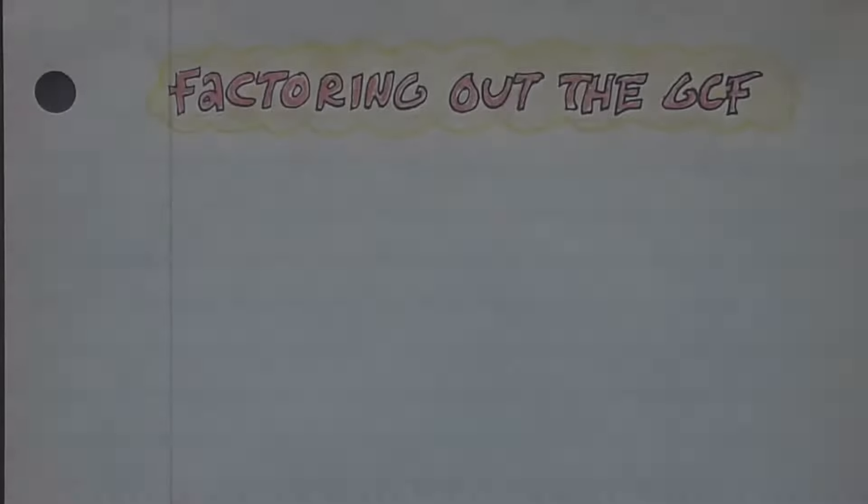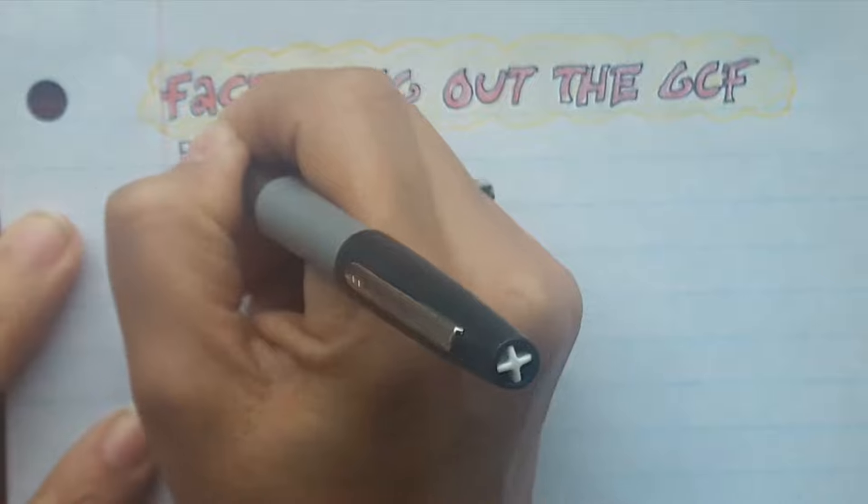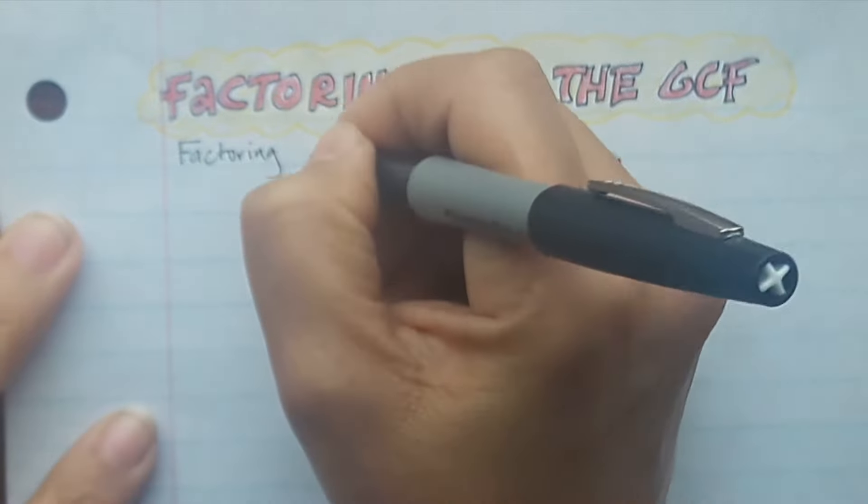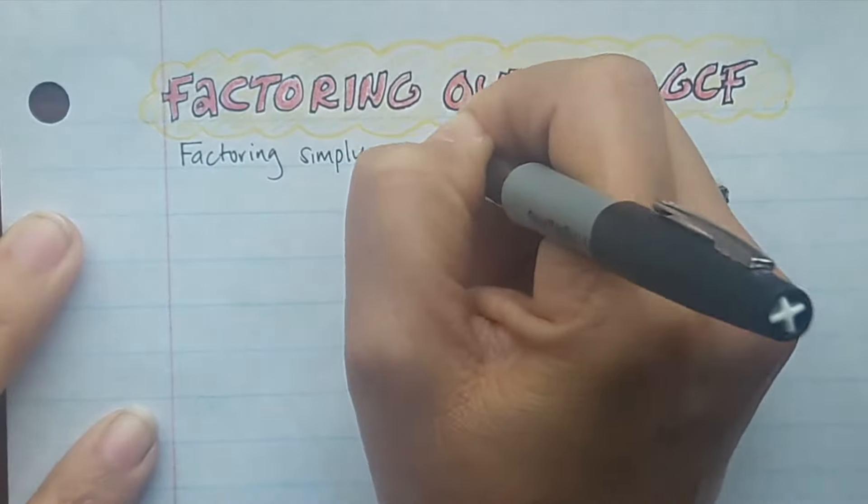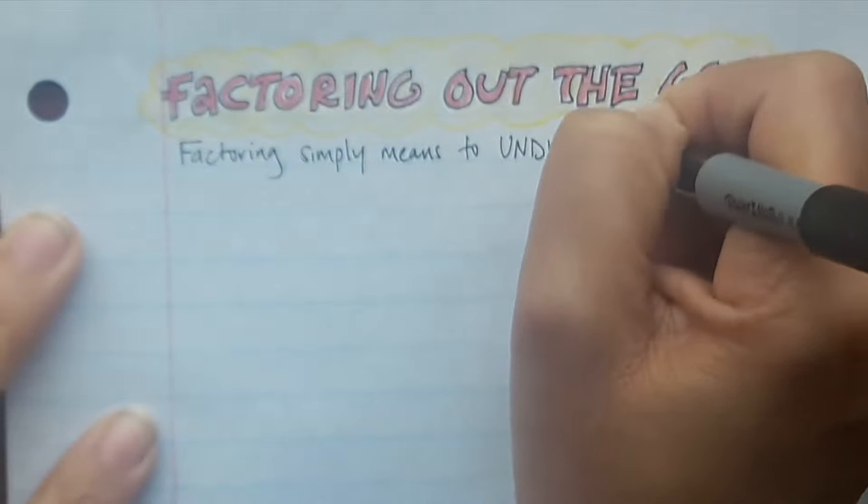I'm going to take a look at factoring out the greatest common factor, also known as GCF. Factoring simply means to undistribute, which means get back out of the house.